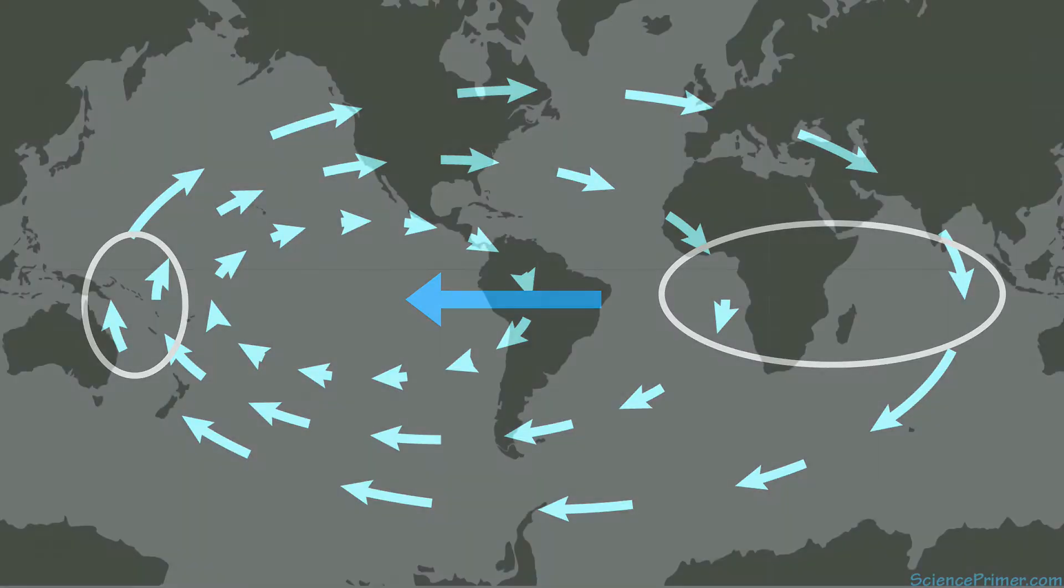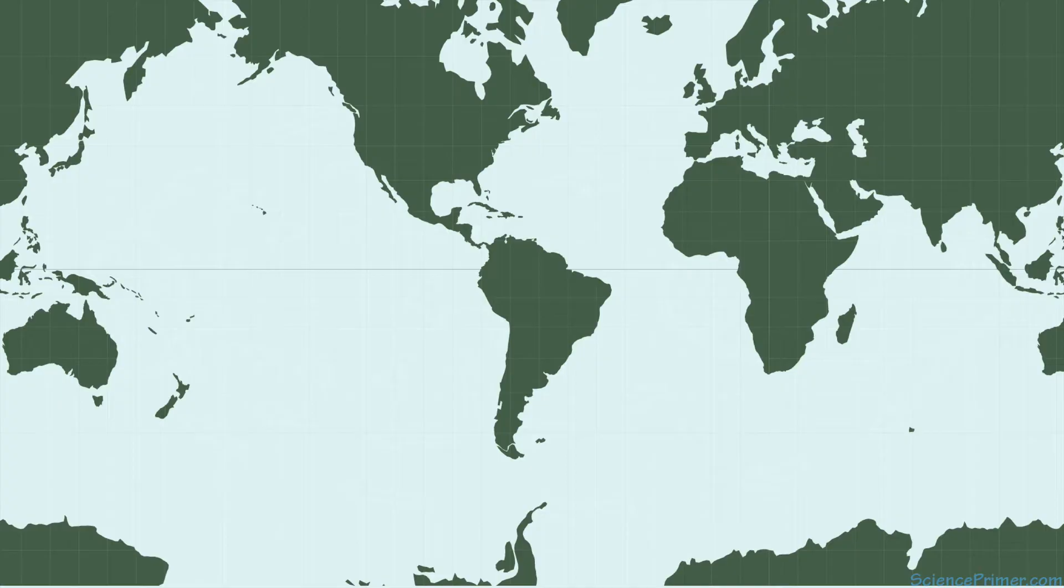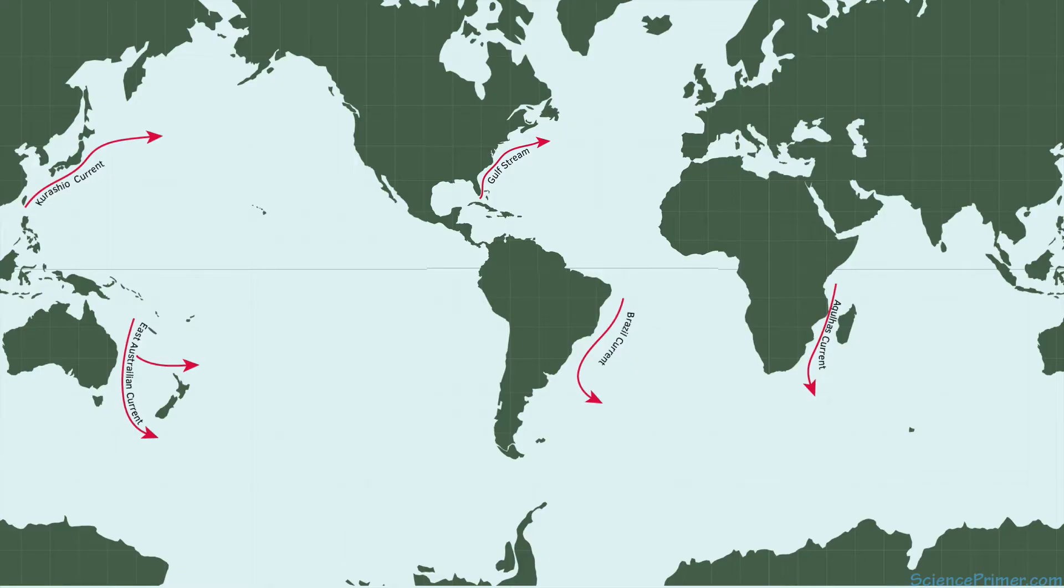This concentration of currents along the western edge of our oceans is called western boundary intensification. These western boundary currents occur in all the major ocean basins.